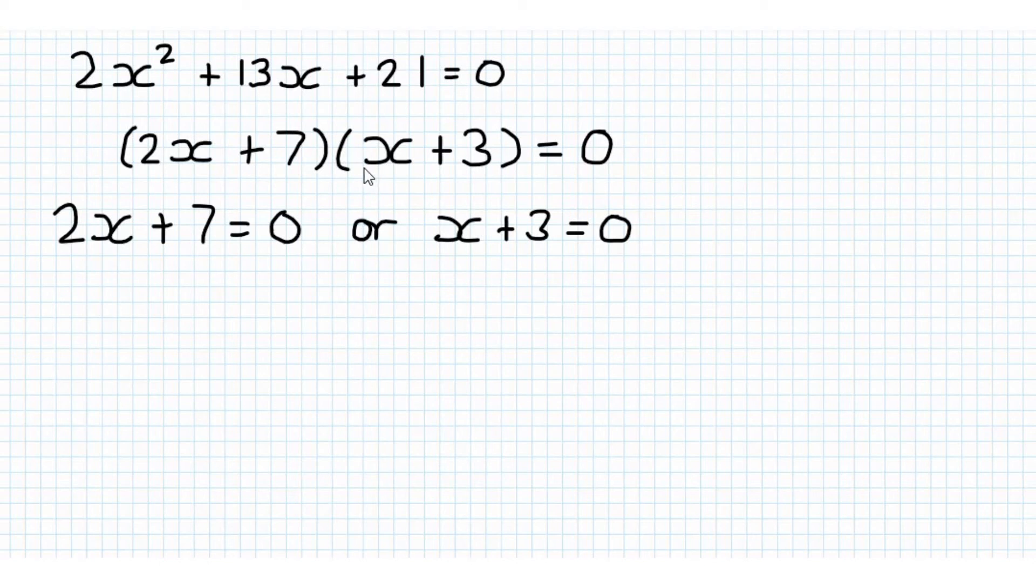And then after that, it's a little bit of trial and error but looking at this last term, we need these two at the end to multiply to 21. So we have 1 and 21, we have minus 1 and minus 21, we have 7 and 3, or minus 7 and minus 3. And we'll just have to try the different combinations in different brackets and see which one gives us the 13x in the middle. And that's our factorized form.